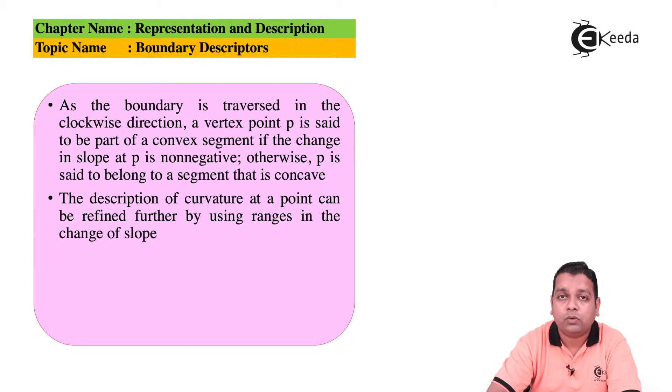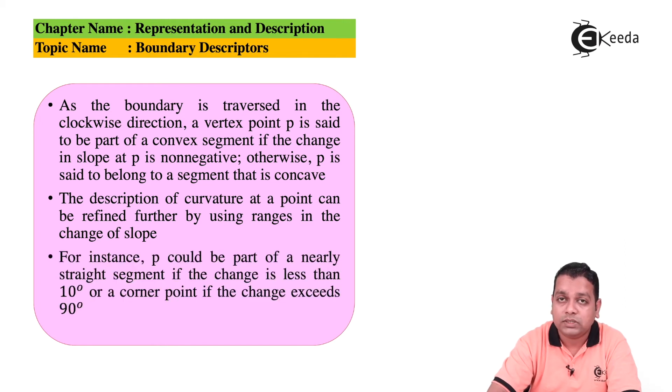The description of the curvature at the point can be refined further by using ranges in the change of slope. For instance, P could be part of a nearly straight line segment if the change is less than 10 degrees, or a corner point if the change exceeds the value 90 degrees.